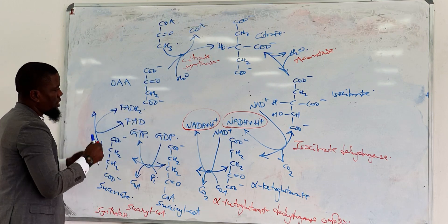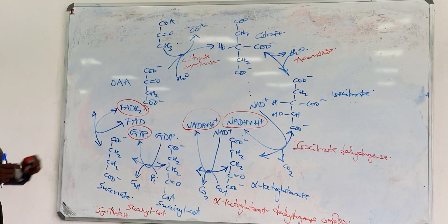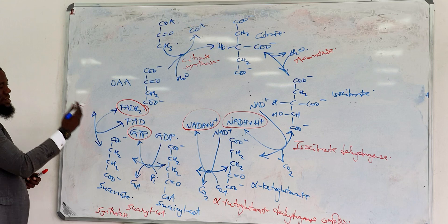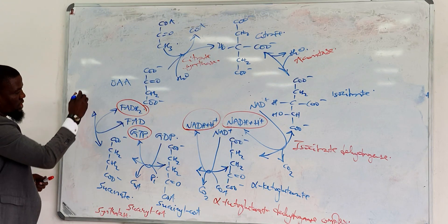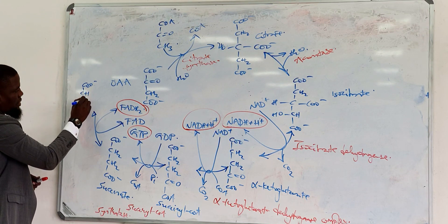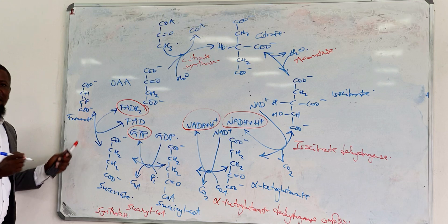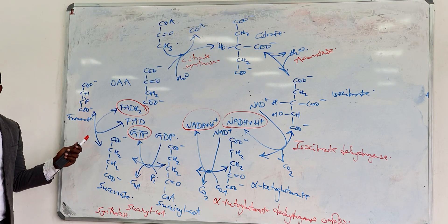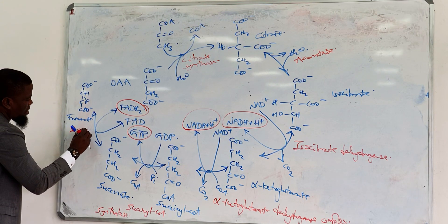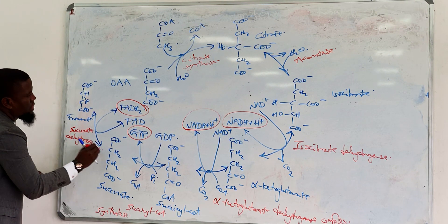And FADH2 is produced. This again is energy just as much as this is energy. So you have FADH2 being produced. The end product, one hydrogen, another hydrogen has been removed from there. This is the same reaction in complex 2 of the electron transport chain which we talked about. And the end product is fumarate. The enzyme, what's the enzyme? Succinate dehydrogenase.